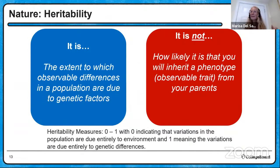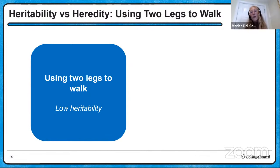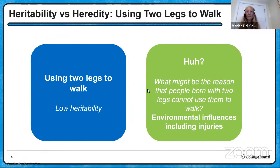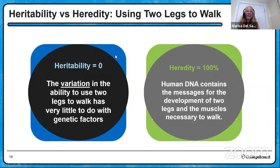Heritability measures between zero and one. Zero means genetics has little to do with it — it's all environment. One means genetics is a big component. For example, using two legs to walk has low heritability. The reason somebody with two legs might not walk is usually environmental — a broken leg, an injury, an amputation — so heritability is close to zero. The variation between those who can and can't walk is likely environmental. But the heredity of being born with two legs is essentially 100%, since human DNA contains the messages to develop two legs and the muscles necessary to walk.